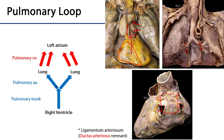We also have a ligamentum arteriosum, which can be seen right here. It's at the origin of the left pulmonary artery and it connects to the concavity of the aorta. It's a remnant of the ductus arteriosus, which is a fetal vascular novelty that allows blood from the pulmonary trunk to be shunted directly to the arch of the aorta — a partial bypass of pulmonary circulation in utero.